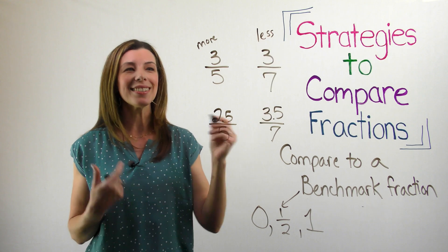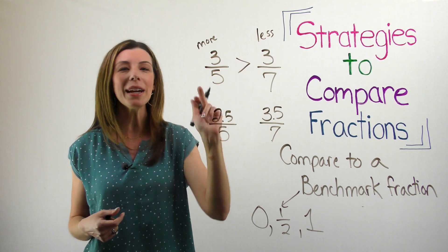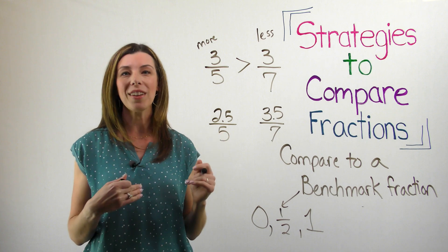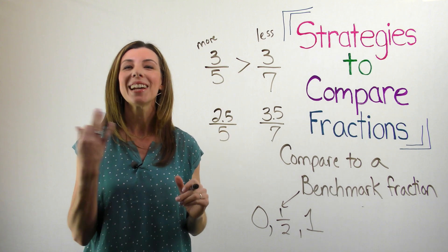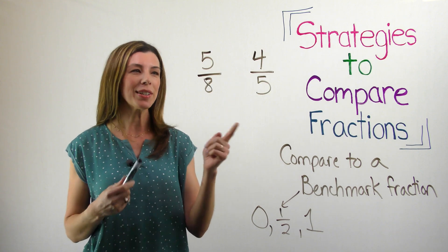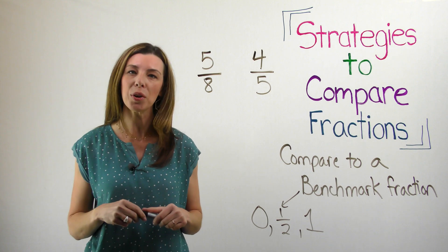So right away, I can see that three-fifths is greater than three-sevenths because it is more than a half and three-sevenths is less than a half. I've written another example here, five-eighths and four-fifths.